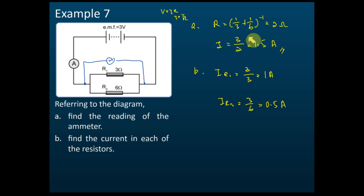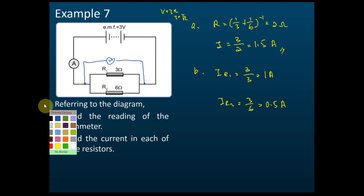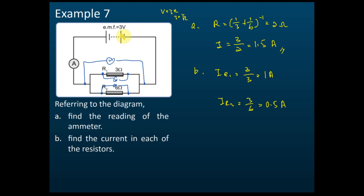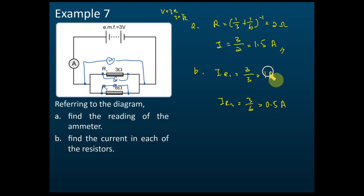V is 3 and R is 2, so it's 1.5 amperes. That's how we find the readings of the ammeter. Now to find the current in each resistor, we choose these two points for I1 and these two points for I2. For a parallel circuit, if this is 3 volts, this is also 3 volts and here also 3 volts. So for R1: 3 divided by 3 equals 1 ampere. For R2: 3 divided by 6 equals 0.5 amperes. The sum of these two must equal 1.5 amperes.